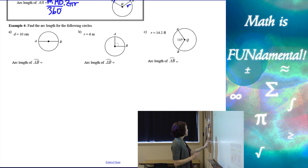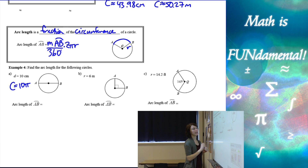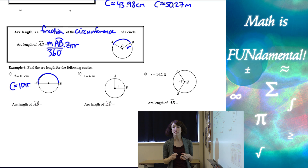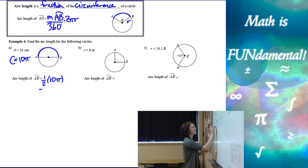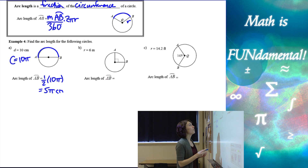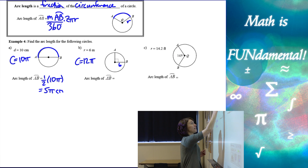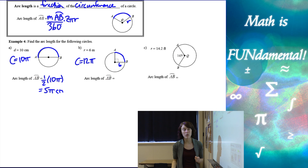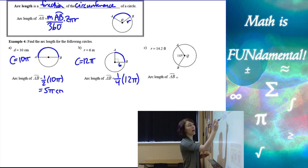For the first example with diameter given, circumference is 10 pi. Arc AB is exactly half the circle, so we take half of 10 pi — that's 5 pi centimeters. For the second example with radius 6, circumference is 2 times 6, which is 12 pi. Arc AB is 90 degrees, which is exactly one quarter of the circle. So we take one quarter of 12 pi, giving us 3 pi meters.